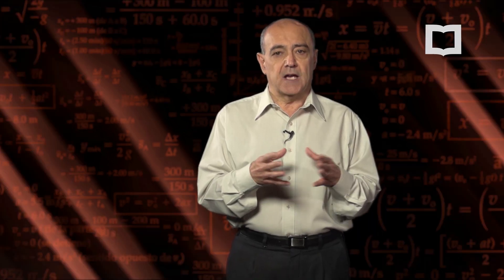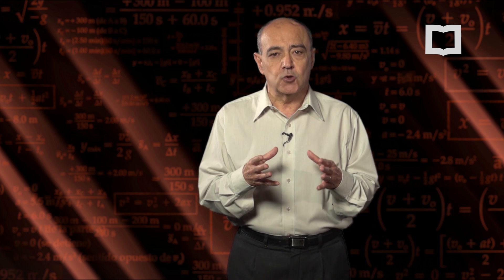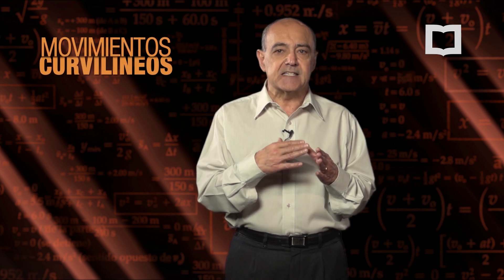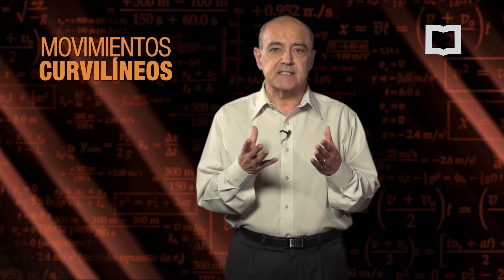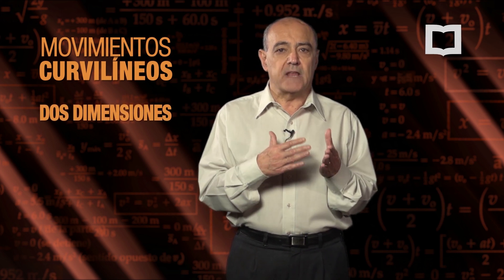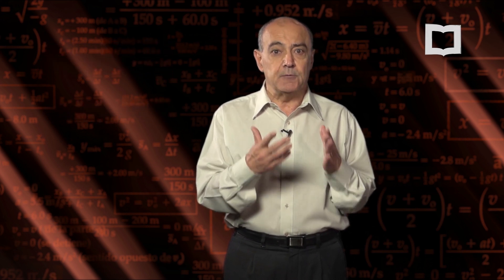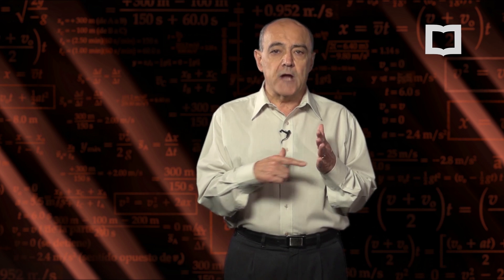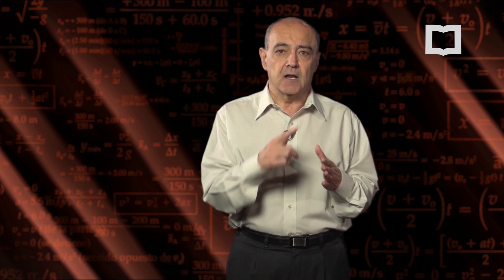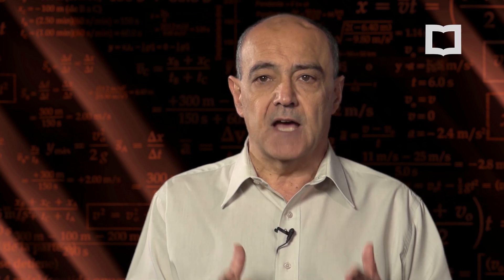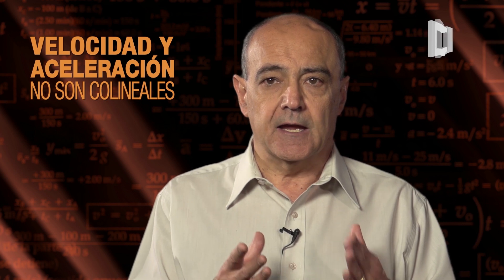En esta clase vamos a desarrollar un movimiento donde la trayectoria es curvilínea, es decir, una trayectoria que se realiza en un plano. Consecuentemente vamos a necesitar dos dimensiones: una coordenada horizontal y una coordenada vertical. En este caso, el vector velocidad y el vector aceleración no son colineales, sino que van a estar en distintas direcciones.